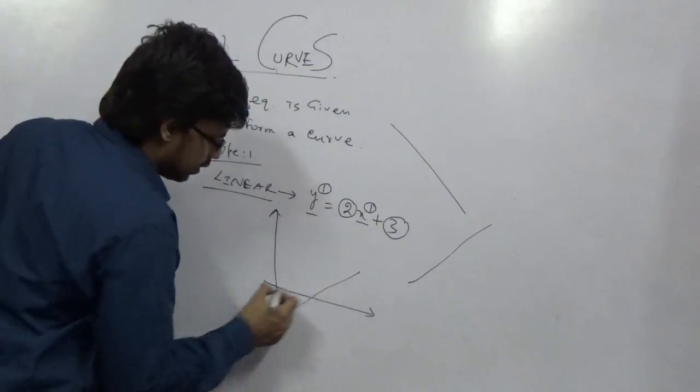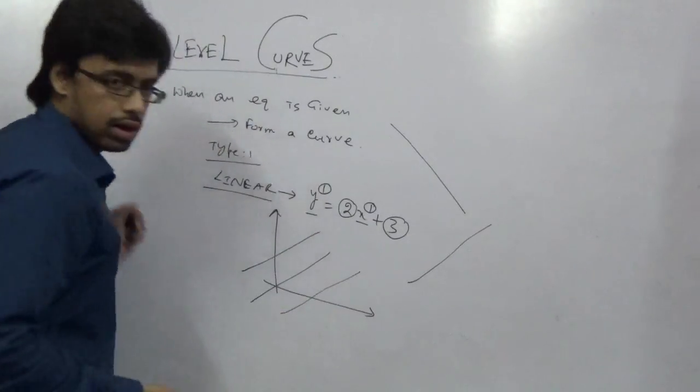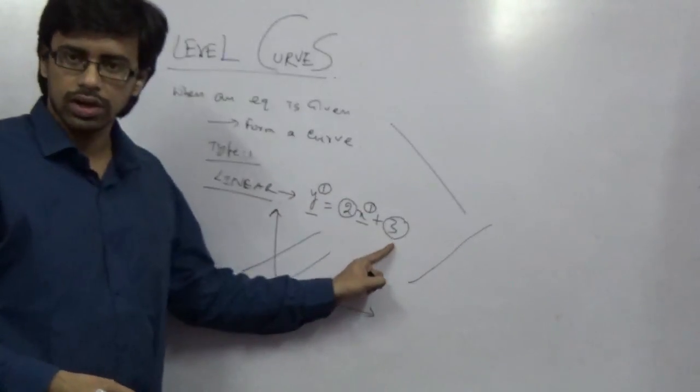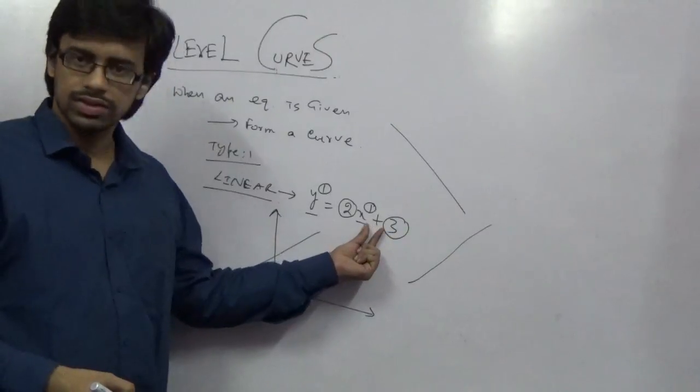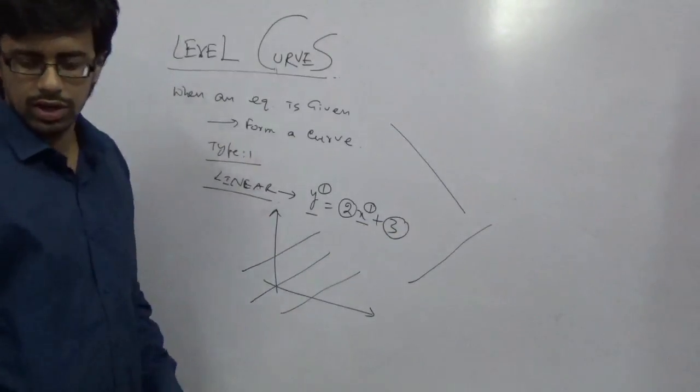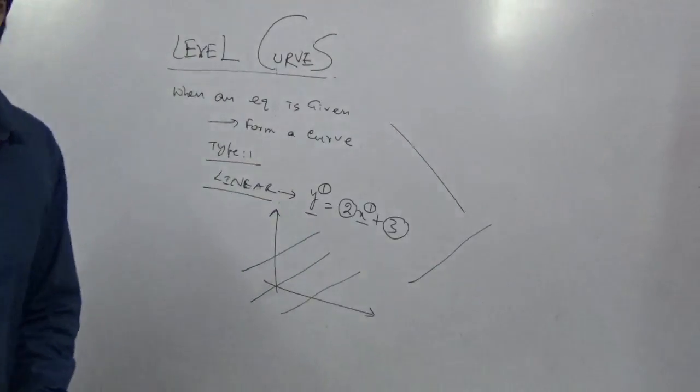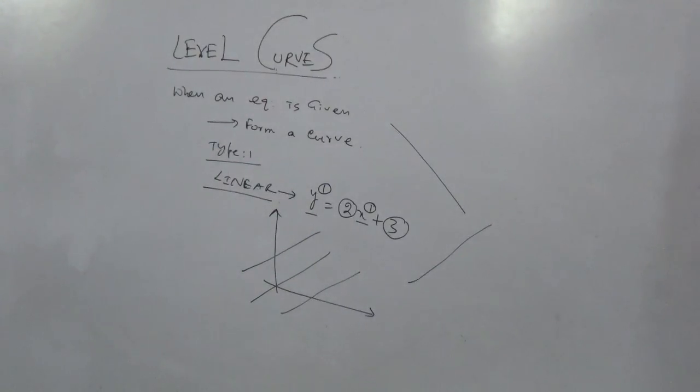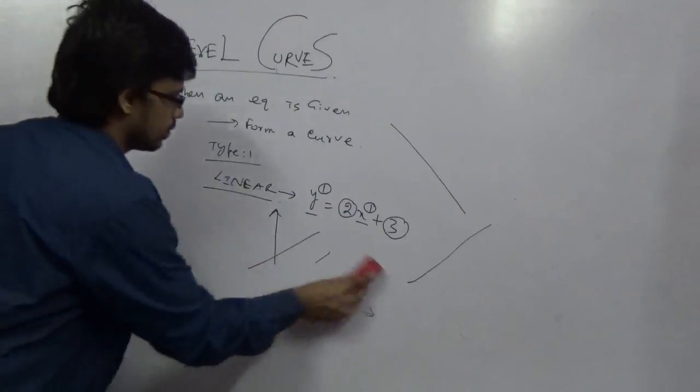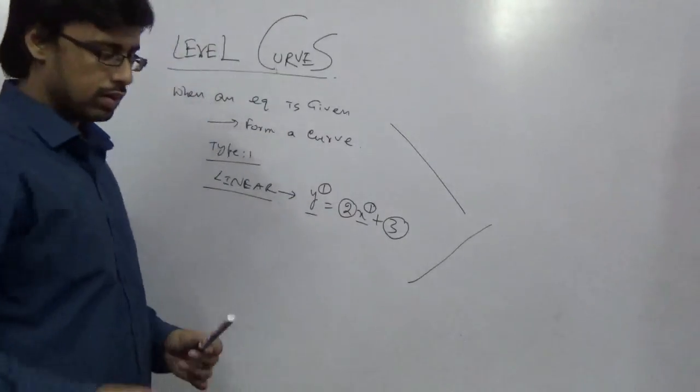So now it will go up from where? Here, here, here, where? It depends on this value. Now I am going to draw it. Is this positive? Answer is yes. So you are going to draw this curve in this way.